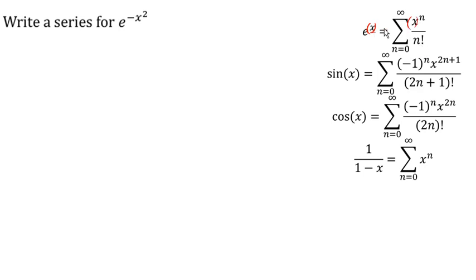So we're just going to make a substitution here. We're going to let this be the inside of my exponential. So e to the negative x squared will be the sum from n equals 0 to infinity of negative x squared to the n over n factorial.